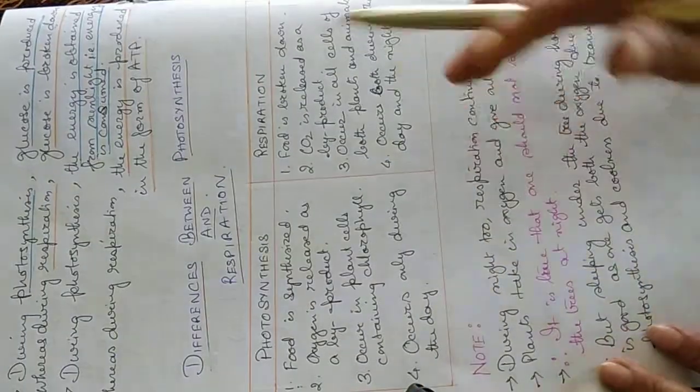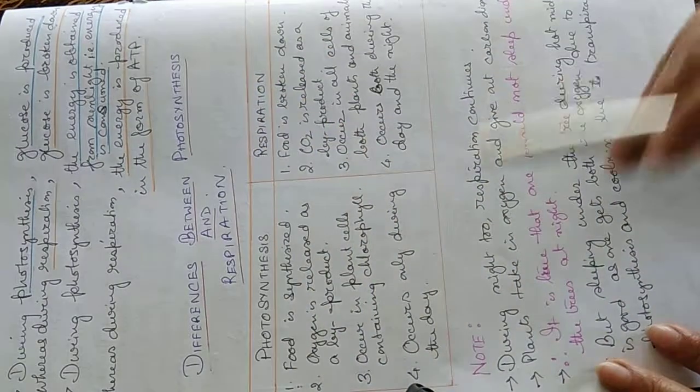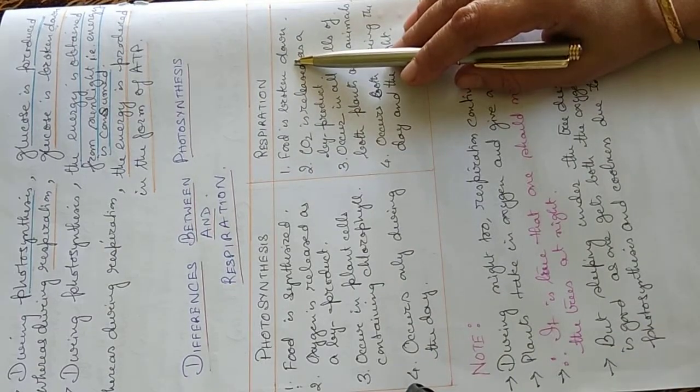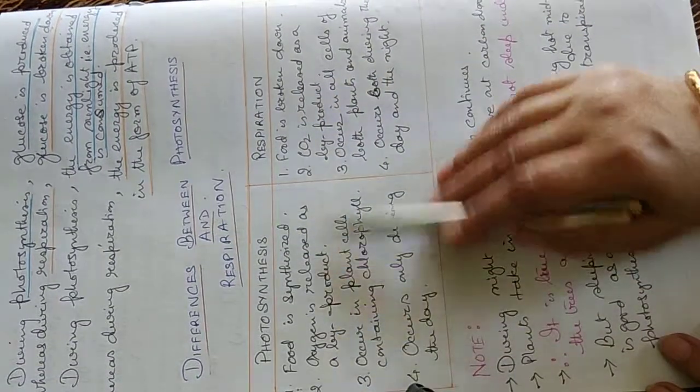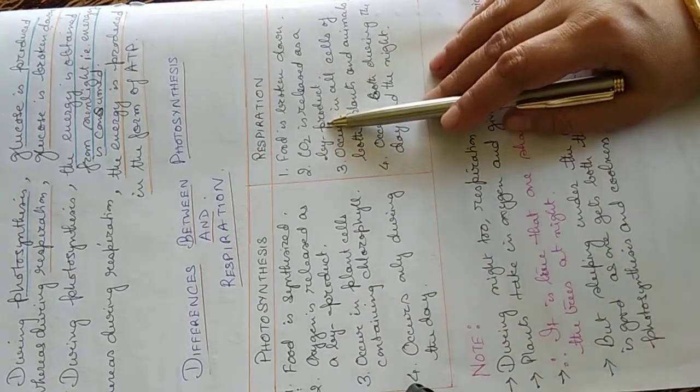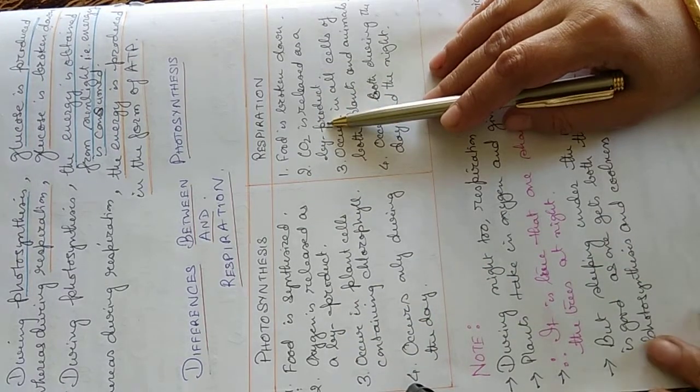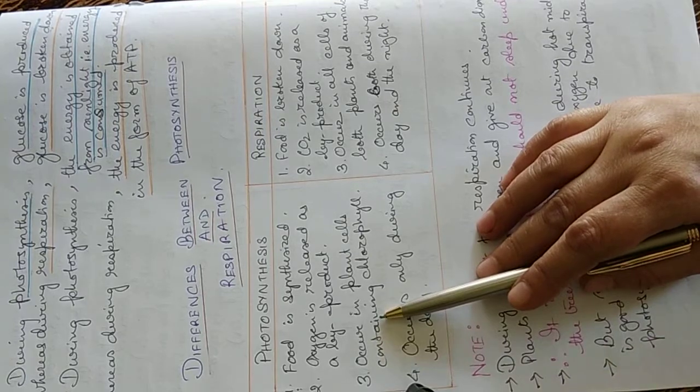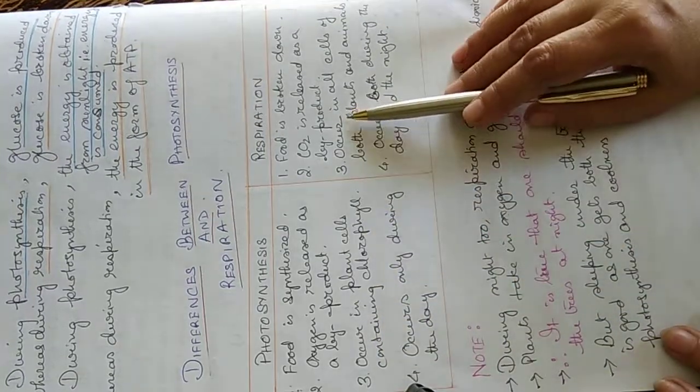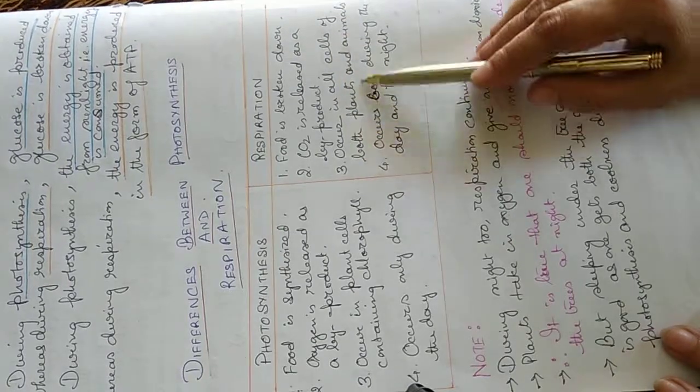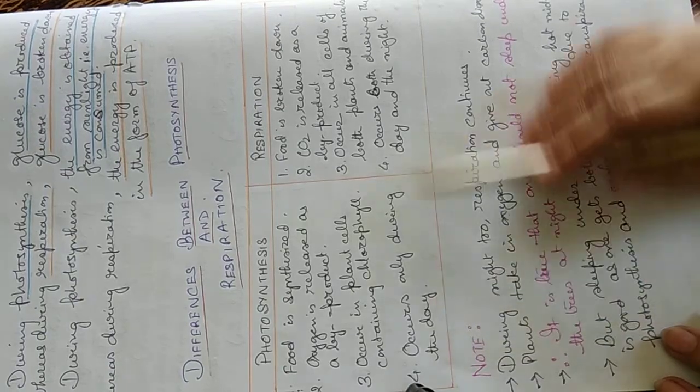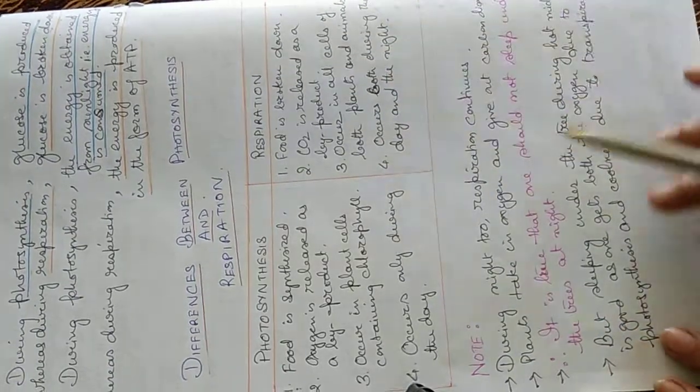Now differences between photosynthesis and respiration. Food is synthesized in photosynthesis, in respiration food is broken down. Oxygen is released as a byproduct in photosynthesis, carbon dioxide is released as byproduct in respiration. Photosynthesis occurs in plant cells containing chlorophyll whereas respiration occurs in all cells, both plants and animals. Photosynthesis occurs only during the day but respiration occurs both during day and night.